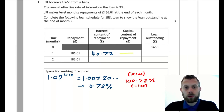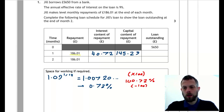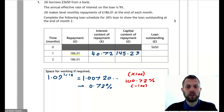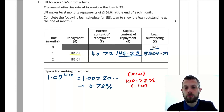The capital content is what's left over from the repayment after you take away the interest content. So this take away this, and we get a capital content of the repayment of £145.29. Finally, you take the previous balance and take away the capital content, and this is going to give us £5,504.71.